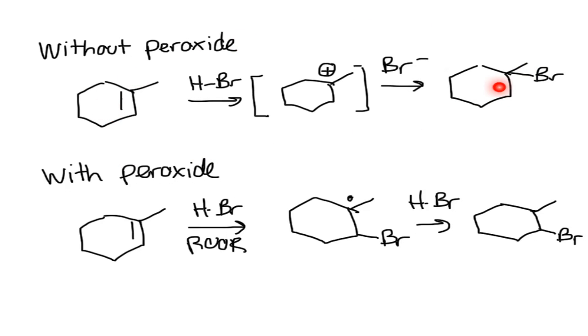The top one is Markovnikov addition. The bottom one is anti-Markovnikov addition. You can see the two different products that would form. Now you know how to put a bromine onto whichever carbon of the double bond.